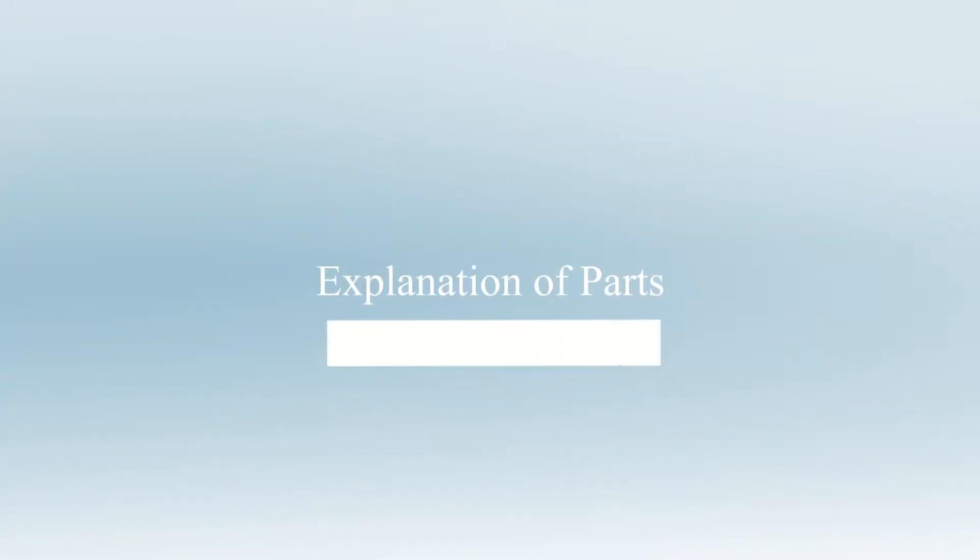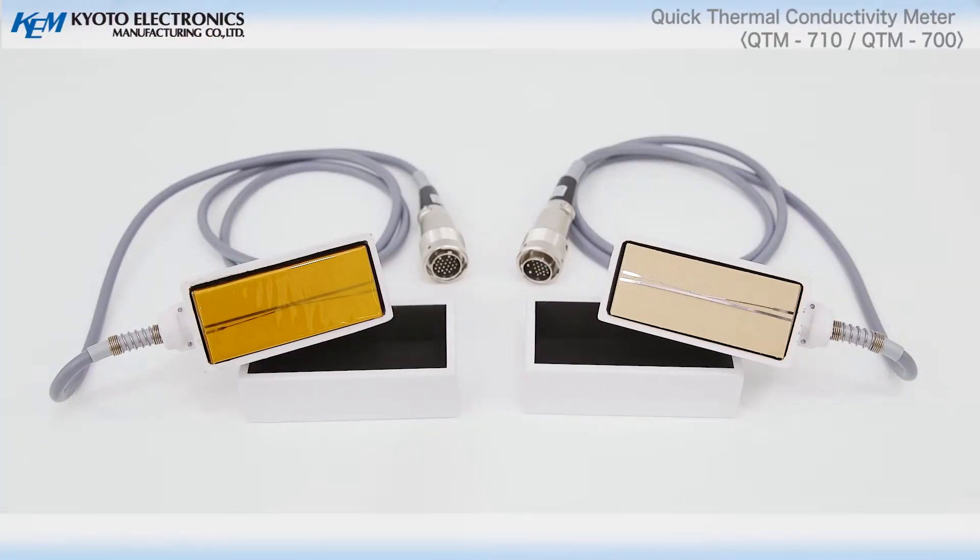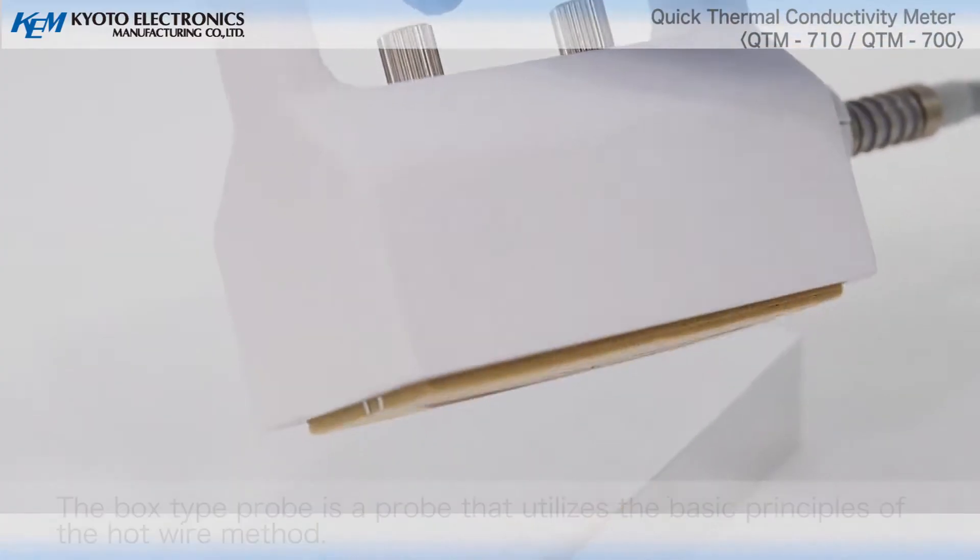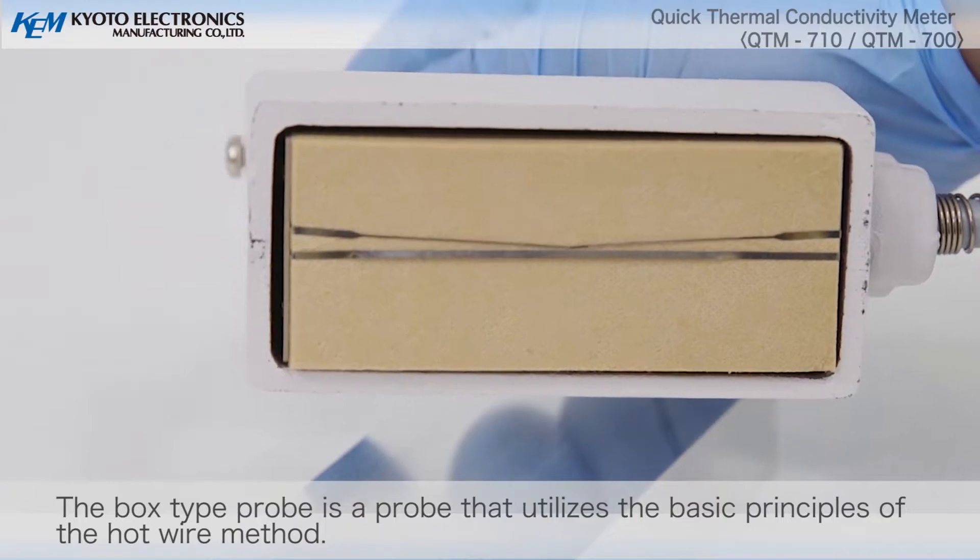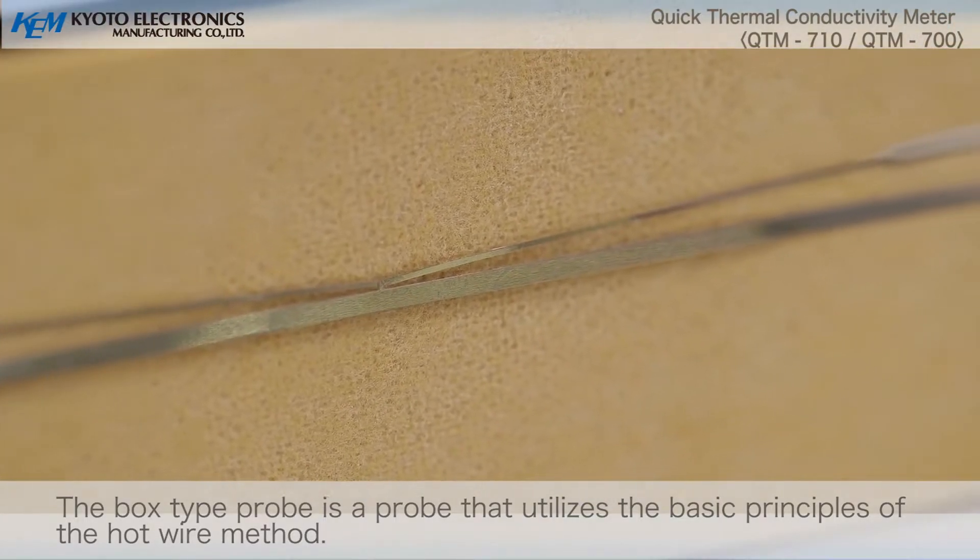Explanation of parts. Box type probe. The box type probe is a probe that utilizes the basic principles of the hot wire method.